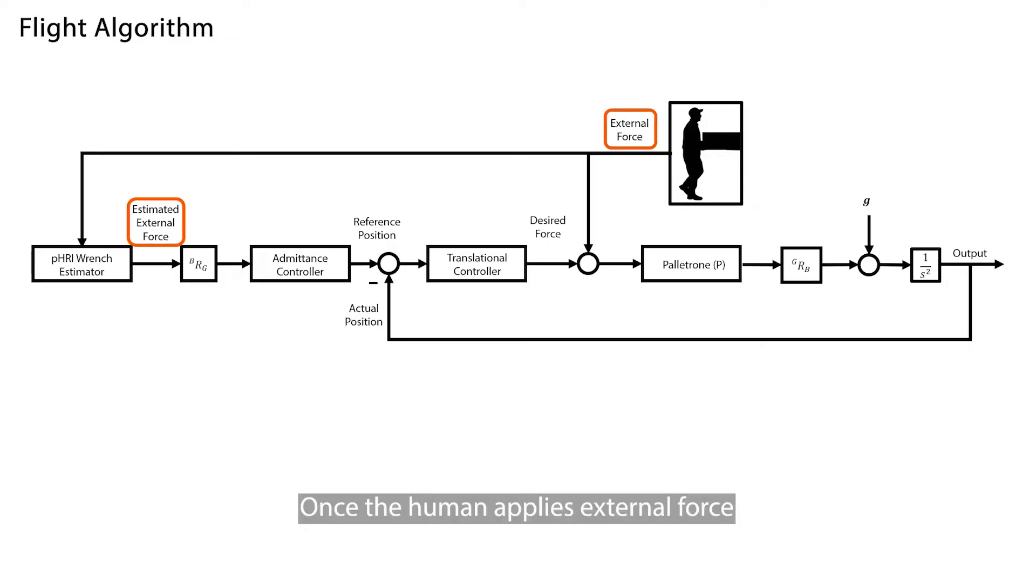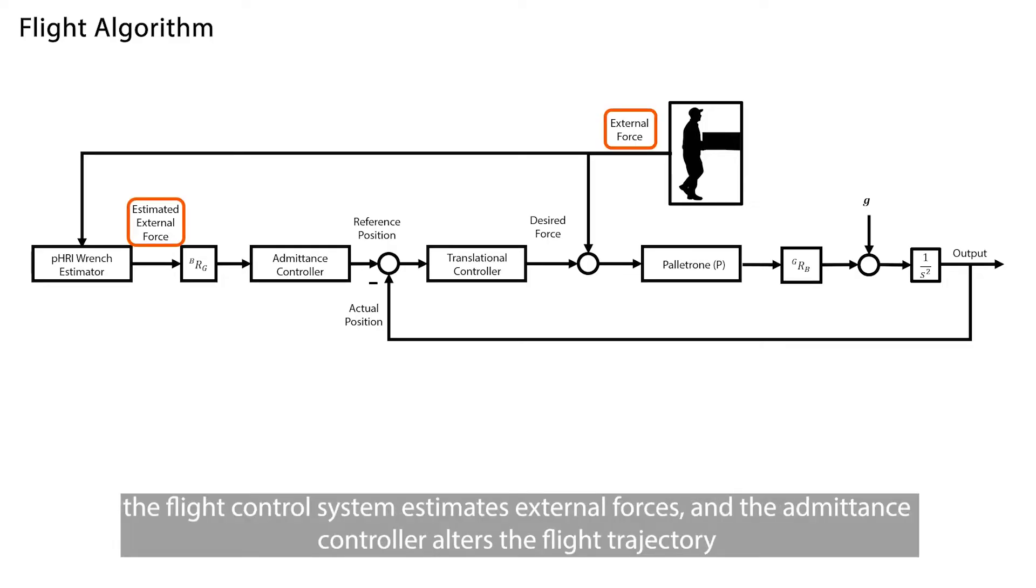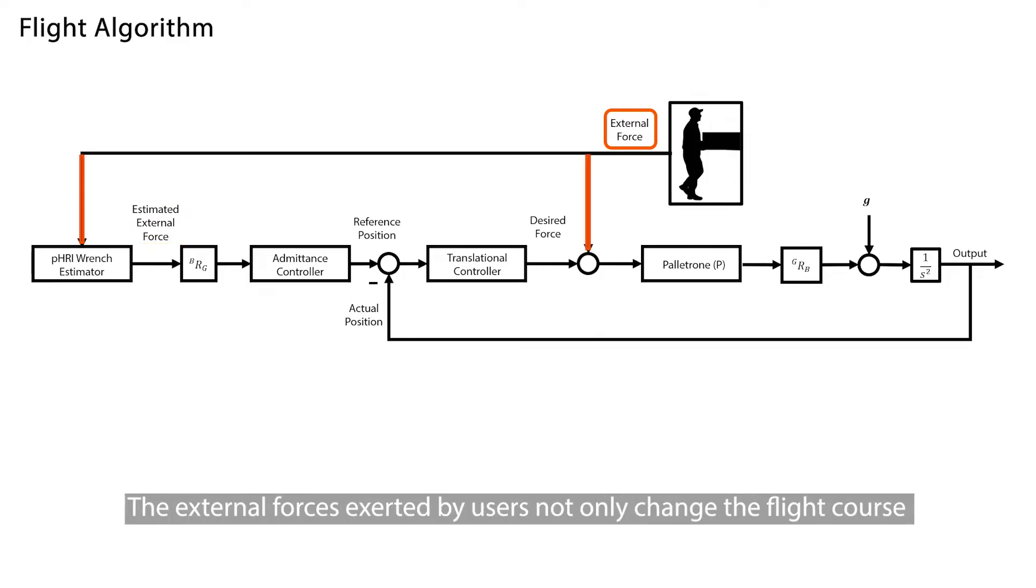Once the human applies external force, the flight control system estimates external forces, and the admittance controller alters the flight trajectory. The external forces exerted by users not only change the flight course but also hinder the flight control wrench generation process.